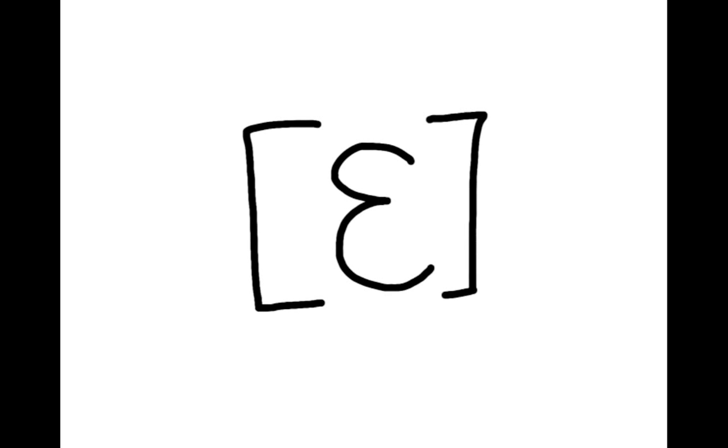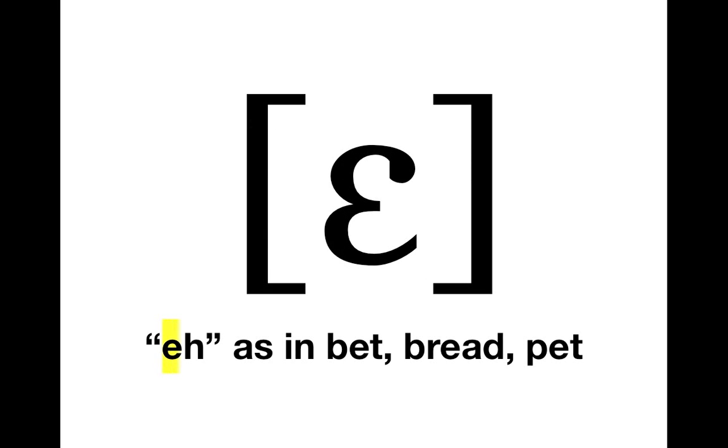Here's our next symbol. Looks kind of like a backwards three or a cursive E. This symbol is the symbol for the sound E, as in bet, bread, pet. All of those words have the E sound in them.